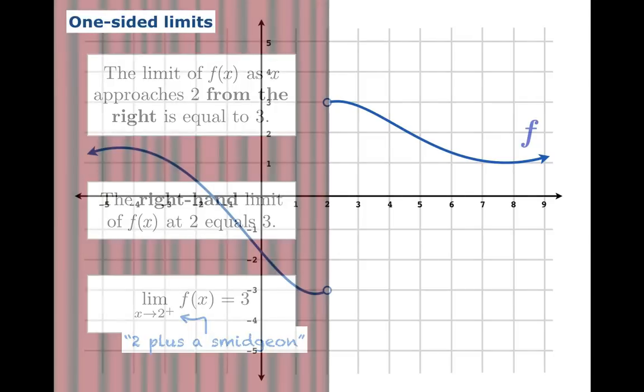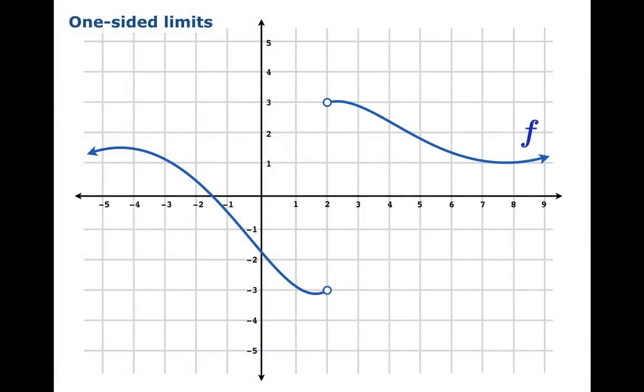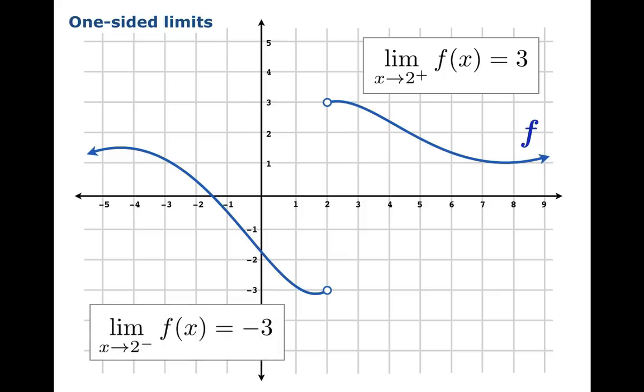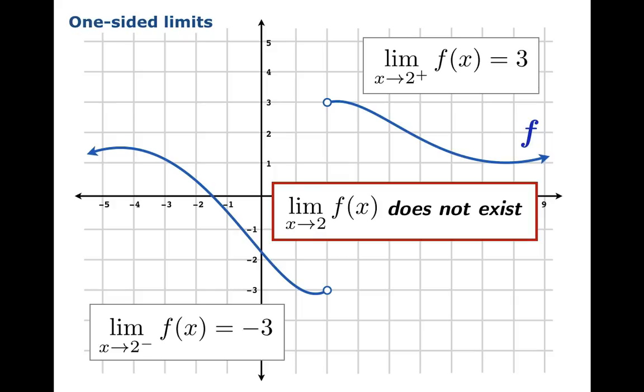And this would be the notation for this right-hand limit. And notice the plus superscript. And that can be thought of as 2 plus a smidgen. You're coming in from the right of 2. Now let's reveal the whole function here, pulling away the curtain entirely. And so we have a right-hand limit equal to 3, a left-hand limit equal to negative 3. And since these don't match up, the flat-out limit as x approaches 2 doesn't exist. These two need to match up if you're going to say the limit exists. Since it depends on which side you come in from, you can't just say that as x approaches 2, the function value gets close to any particular number.